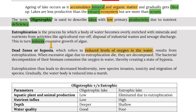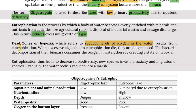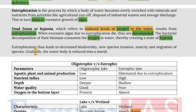Eutrophication induces excessive growth of algae. Dead zones or hypoxia refers to reduced levels of oxygen in water resulting from eutrophication — when excessive algae die and decompose, bacterial decomposition of their biomass consumes oxygen in the water, creating a state of hypoxia. Eutrophication thus leads to decreased biodiversity, new species invasion, toxicity, migration of species, and gradually reduces the water body to a marsh.